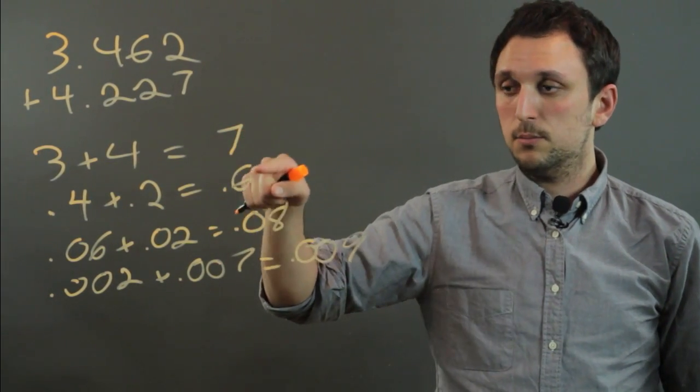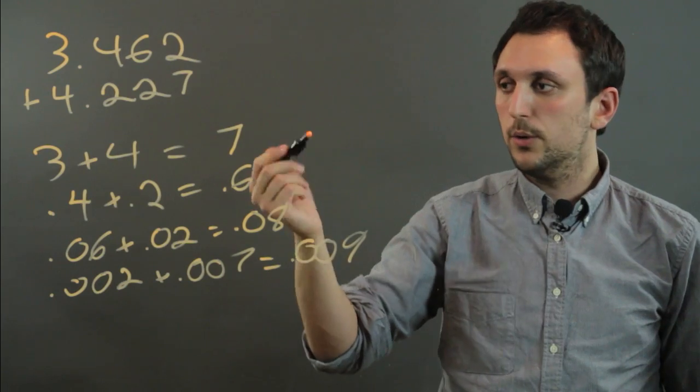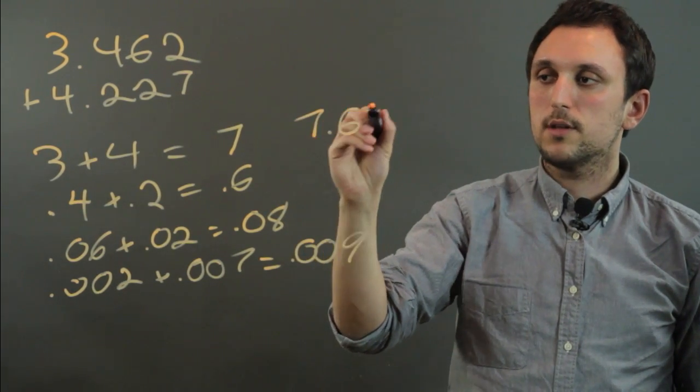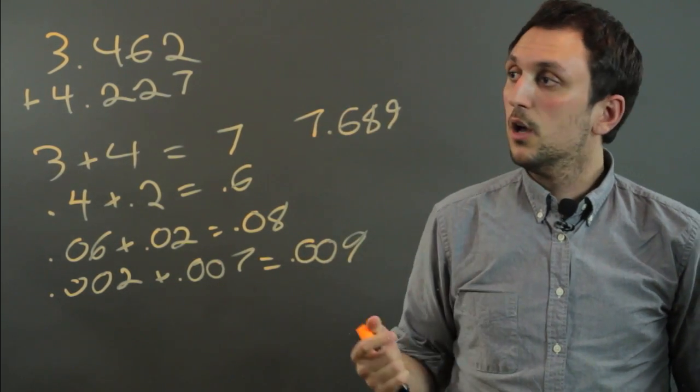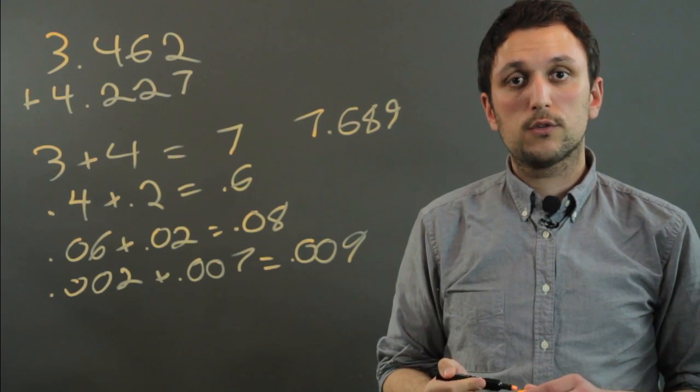So then we add these up, 7 plus 0.6 plus 0.08 plus 0.009, which would be 7.689. So that is basically how you do partial sums with decimals.